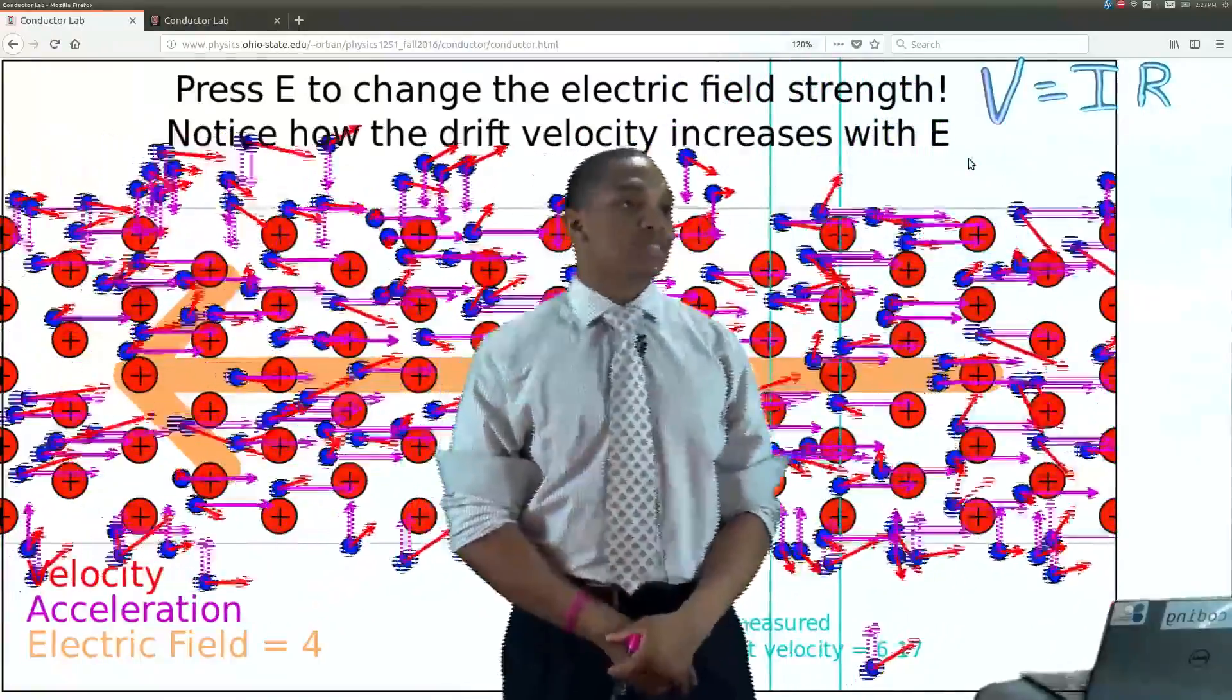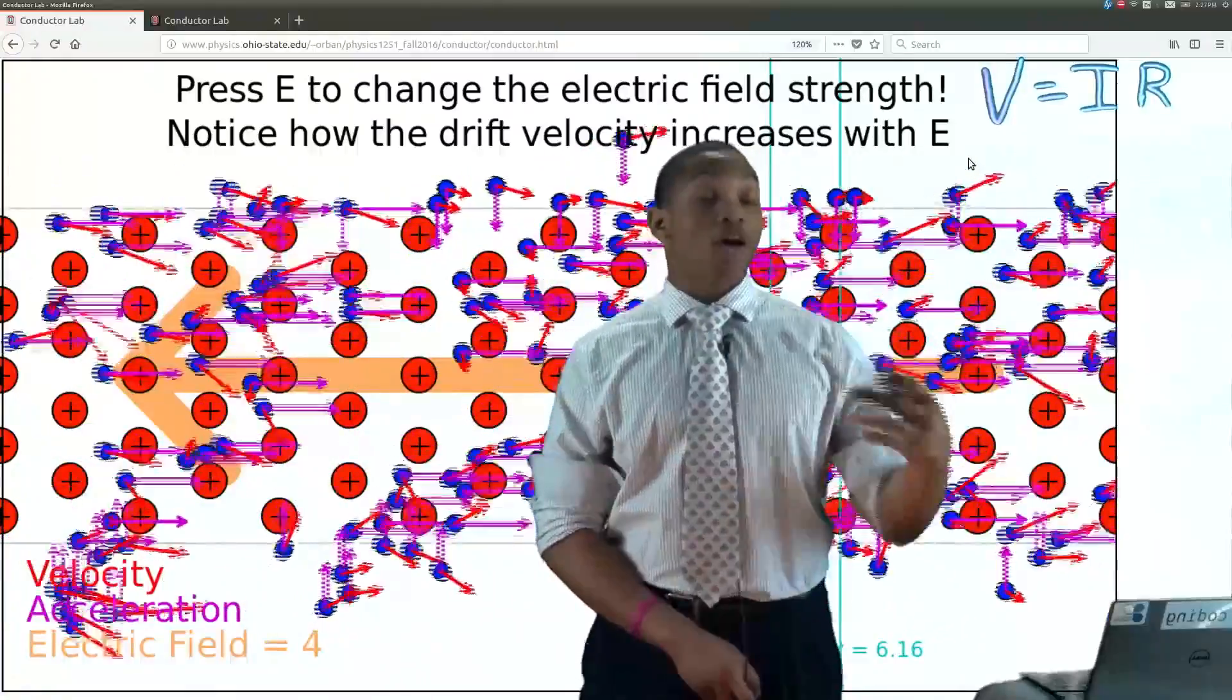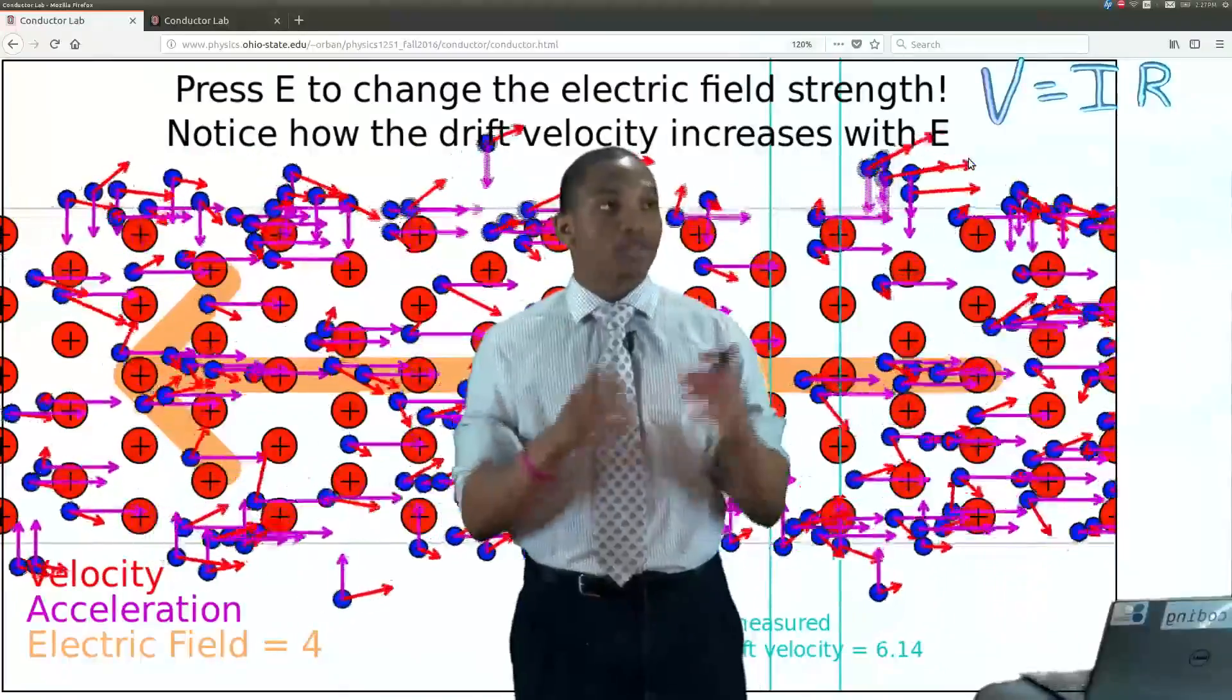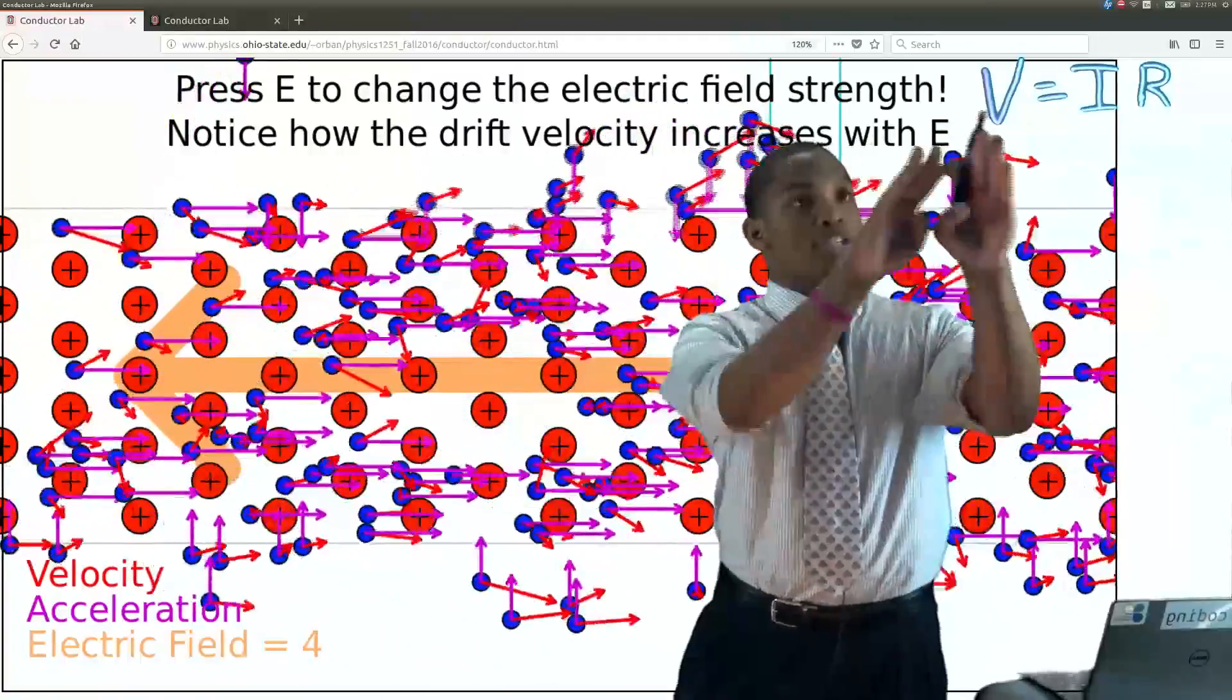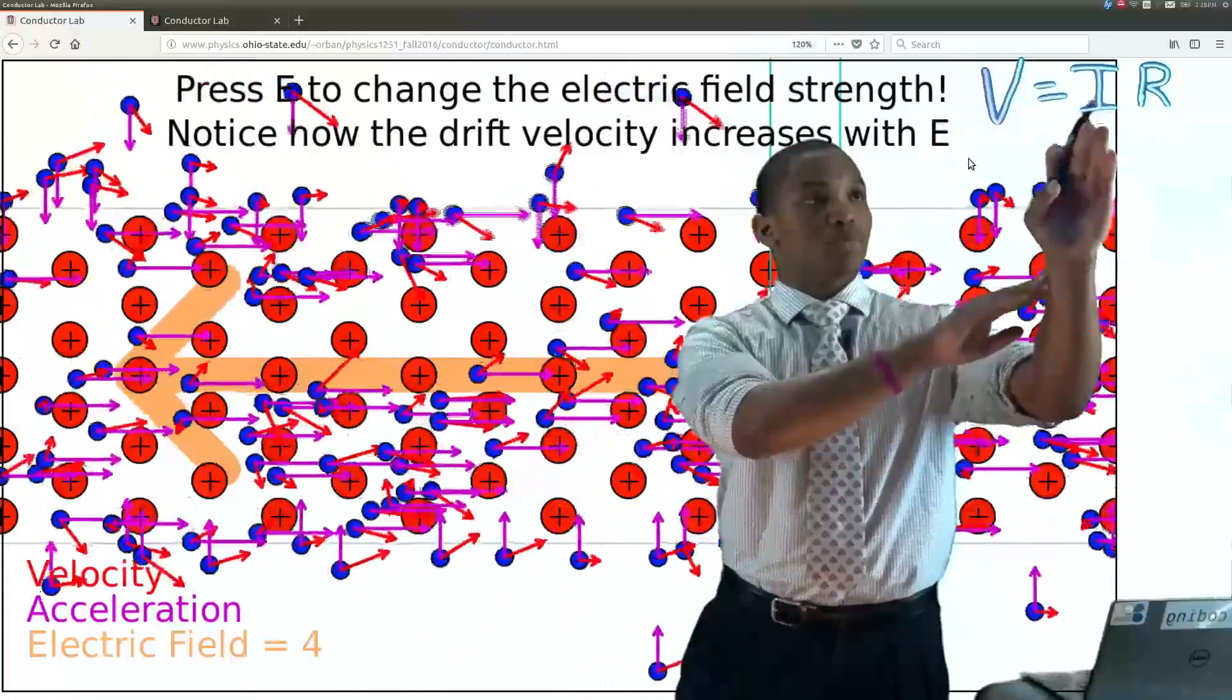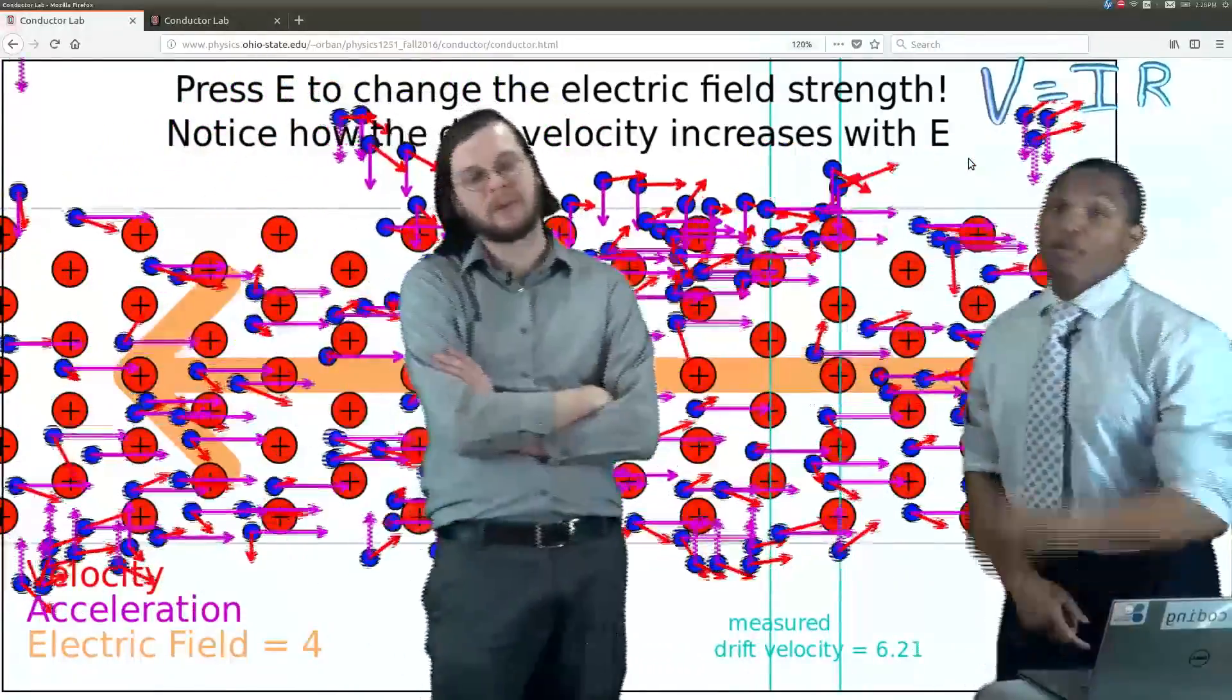So we're not really going to get too much into this, but this is known as the potential difference. And this is known as the current, the charge per second. And this is just the resistance, the physical properties of the conductor. So if we increase the electric field, we also increase the potential difference. And if we keep the resistance, the metal or the length of the conductor, the absolutely same, then increasing this and keeping, increasing the potential difference or the electric field and keeping the resistance the same, you by effect increases the current or the charge per second.